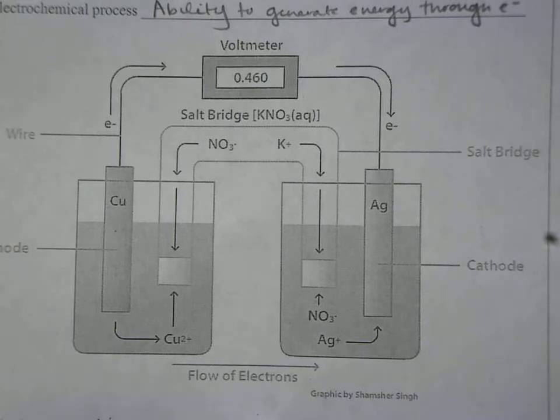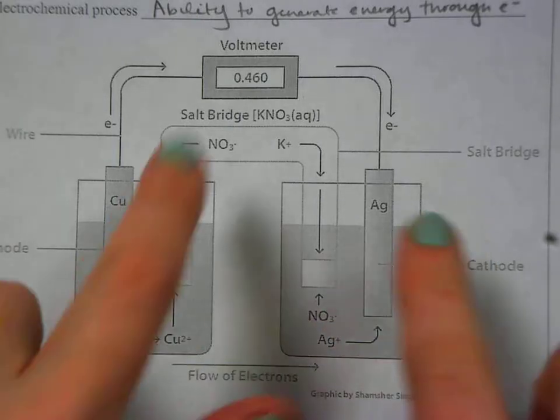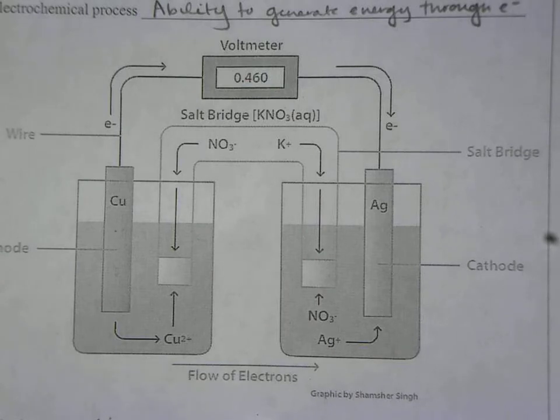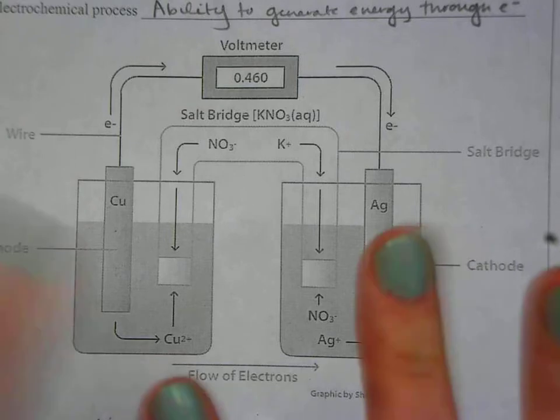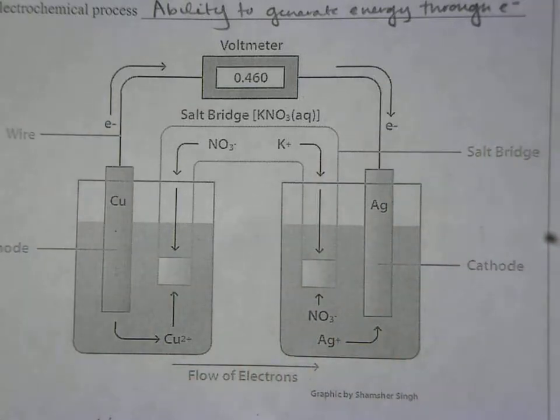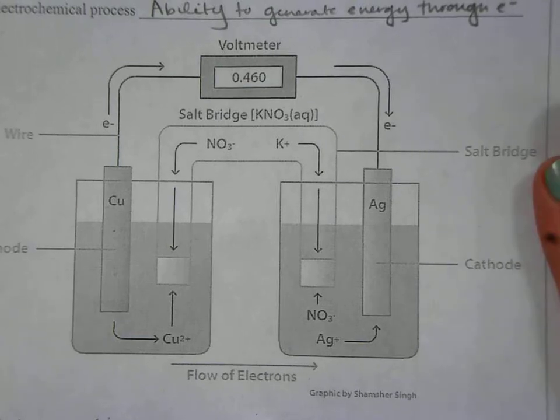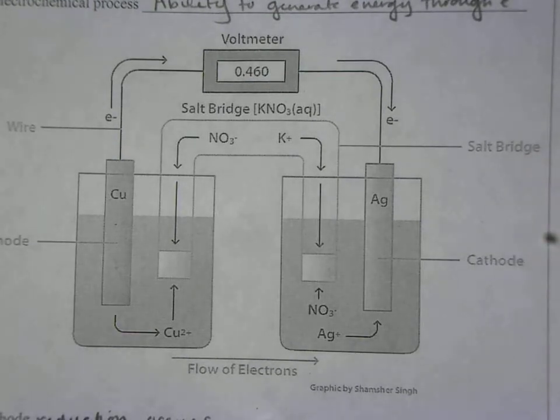from electrons. That electrochemical process is essentially just the ability to generate energy through electrons. We have this whole little system set up and it looks pretty complicated, but it's not too bad. I'm going to walk you through the different components and we'll talk about this step-by-step for how this cell actually works.